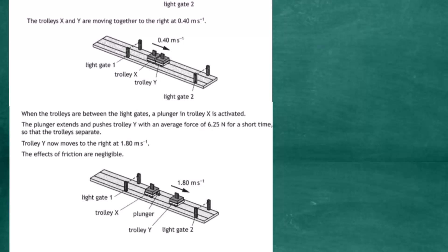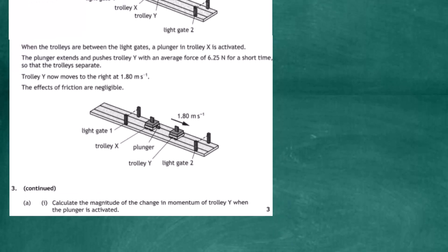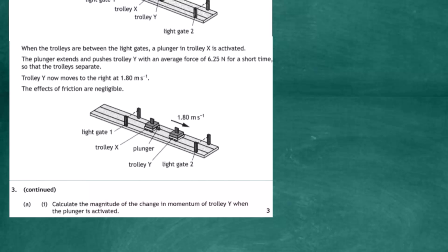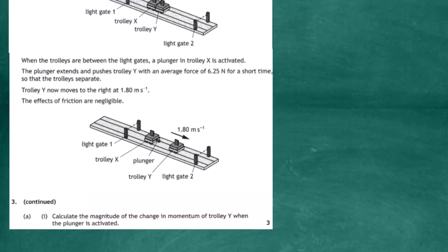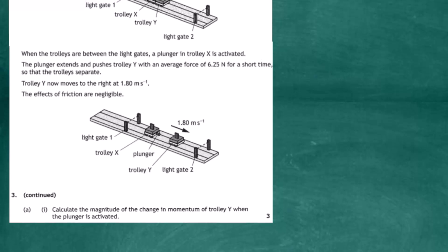The plunger extends and pushes trolley Y with an average force of 6.25 newtons for a short time. The plunger is hit by a small hammer and its spring extends, pushing the trolleys apart. Trolley Y now moves to the right at 1.8 meters per second, and the effects of friction are negligible.